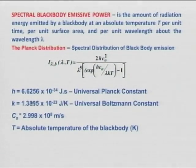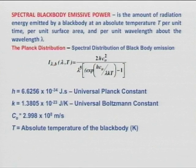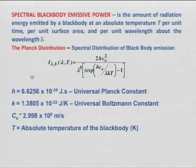We have crossed the rough edges; the track is now straightforward and we can go fast. Coming to Planck's distribution — I cannot derive it, I will just state it. The spectral distribution intensity I_λ,b for a black body is given as 2hc₀² divided by λ⁵[exp(hc₀/λkT) − 1].